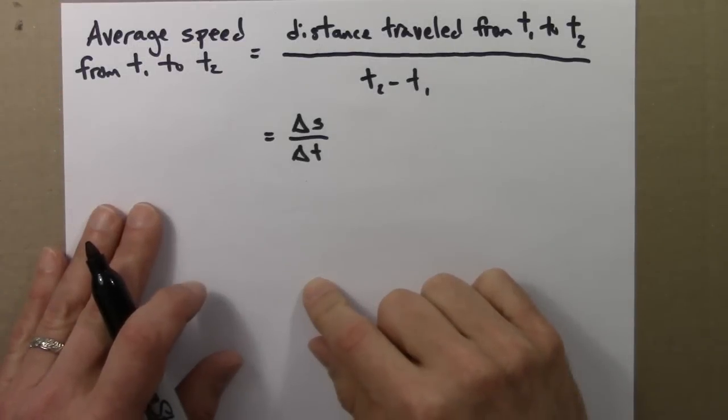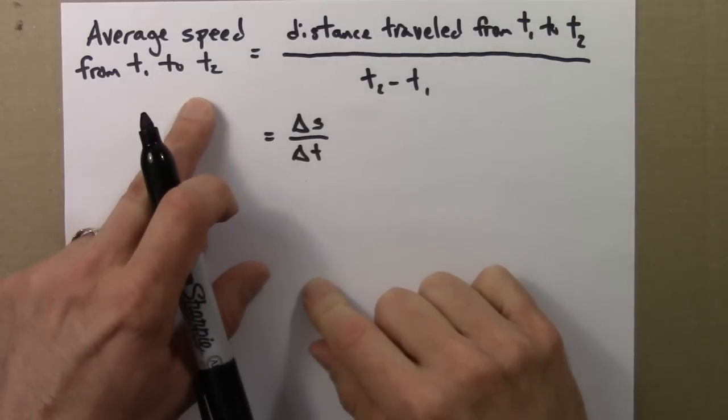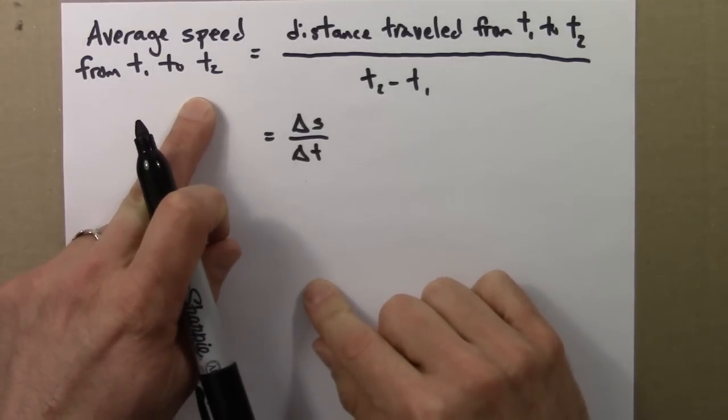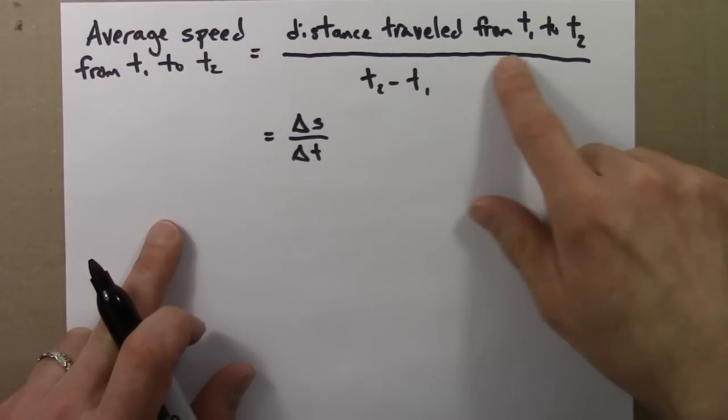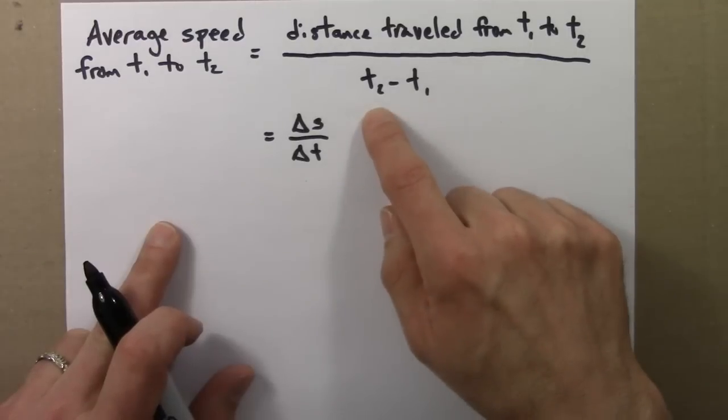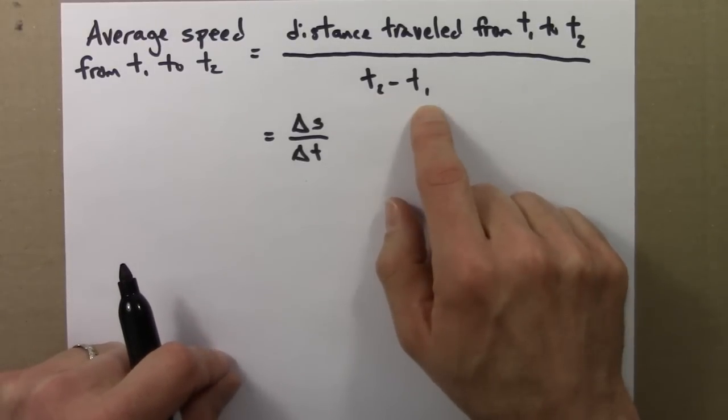Let me generalize this idea of average speed. Average speed from time 1 to time 2, some time interval along your journey, is just the distance you traveled during that time interval from time 1 to time 2, divided by how long that time took, this final time minus the initial time.